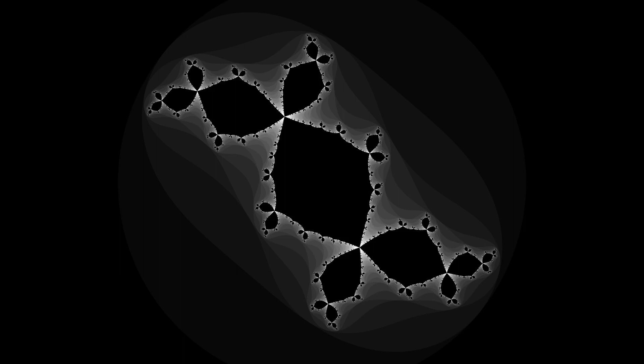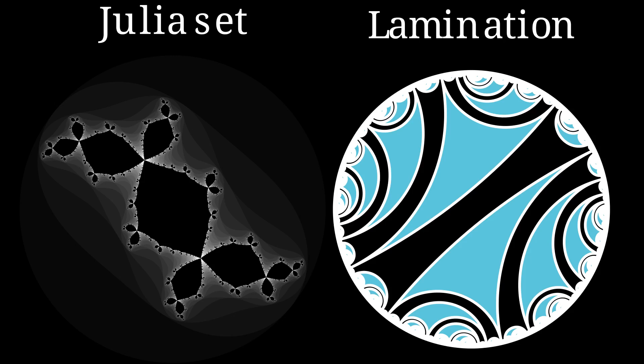The goal of this video was to give a quick overview of how laminations of the unit disk can be generated from a complex polynomial, and how we can view them as both a topological and combinatorial model of the Julia set. By now, I hope we can return to the picture side by side and see the connection.